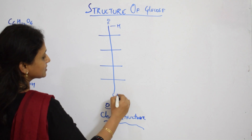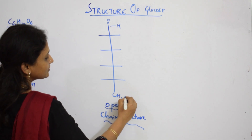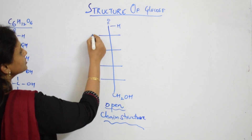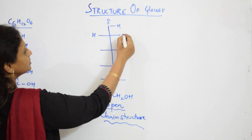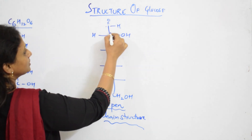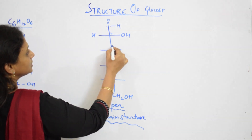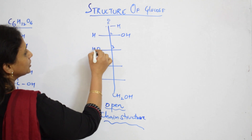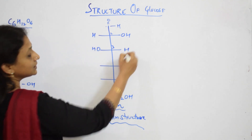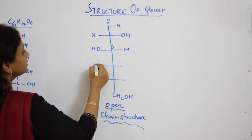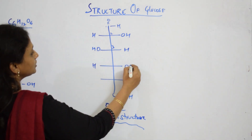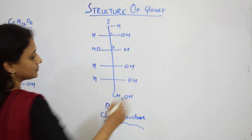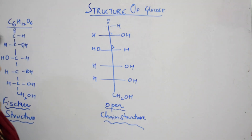This is carbon one, two, three, four, five, and the sixth is your CH2OH. Filling in: hydrogen here, oxygen on second carbon. The third carbon has OH on this side and H on this side. The fourth has H and OH, and the fifth has H and OH.